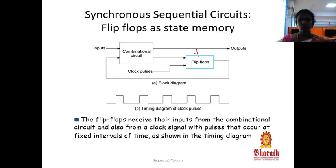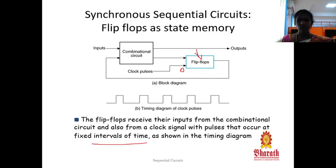The basic building block of sequential circuit is either flip-flop or latches — mostly flip-flops are used in sequential circuits, acting as memory elements. The flip-flop is used to store the previous output. Whenever the clock pulse is given to the flip-flop, it gives input to the combinational circuit. If the clock pulse is zero, the flip-flop remains idle and won't accept or pass any input or output. The clock signal provides pulses at fixed intervals of time.